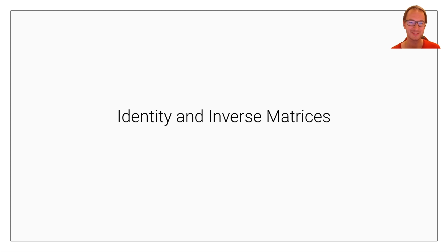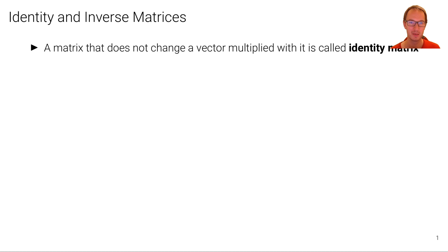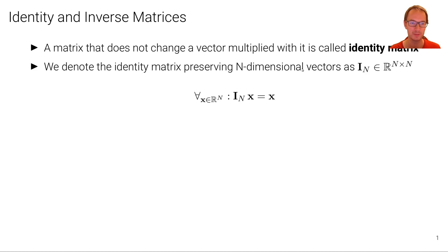This unit is on identity and inverse matrices. A matrix that does not change a vector multiplied with it is called the identity matrix. We denote the identity matrix preserving n dimensional vectors with boldface I subscript n, where n indicates the dimensionality of the vector that it preserves.